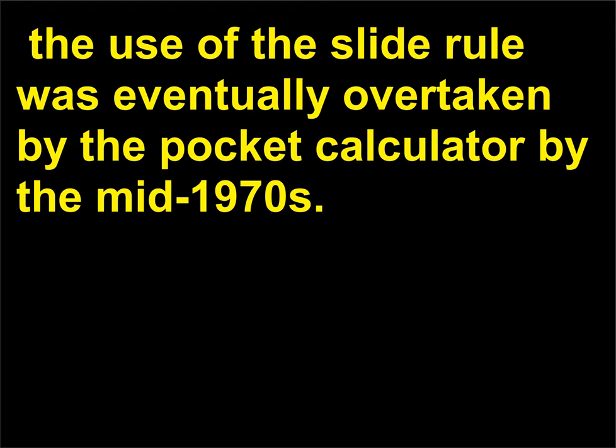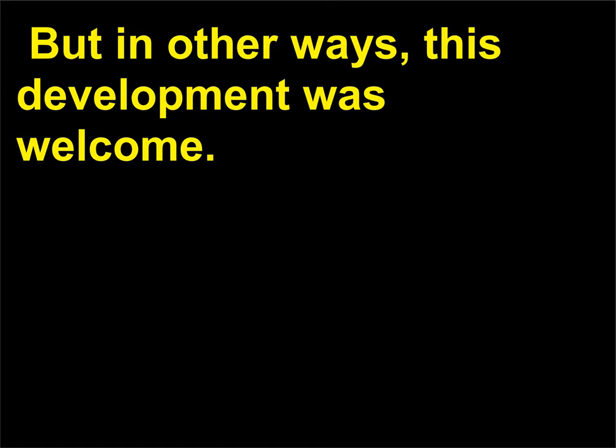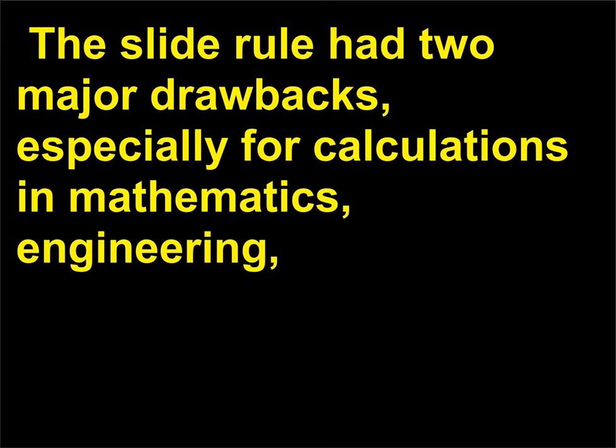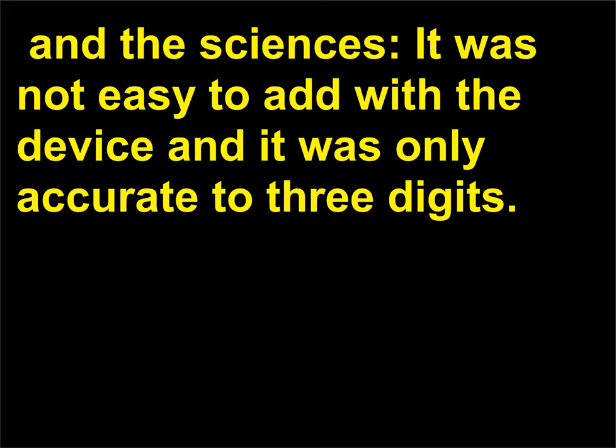Sadly for mathematical traditionalists, the use of the slide rule was eventually overtaken by the pocket calculator by the mid-1970s. But in other ways this development was welcome. The slide rule had two major drawbacks, especially for calculations in mathematics, engineering, and the sciences: it was not easy to add with the device and it was only accurate to three digits.